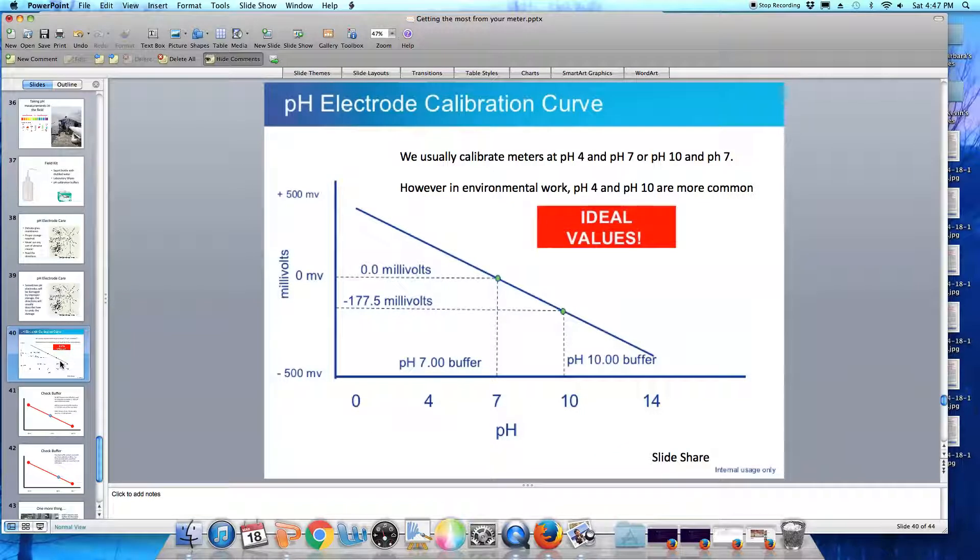Let's talk about the pH electrode calibration curve. Most of the time, when you're working in a laboratory, you're going to know whether your pH readings are going to be alkaline or acidic. So the first buffer we put our probe into for calibration will be neutral pH 7. And in this example, the pH 7 buffer will generate an electrical signal of 0.0 millivolts.